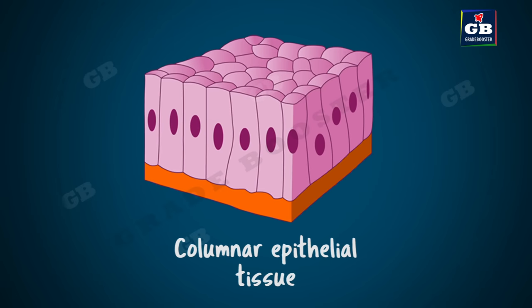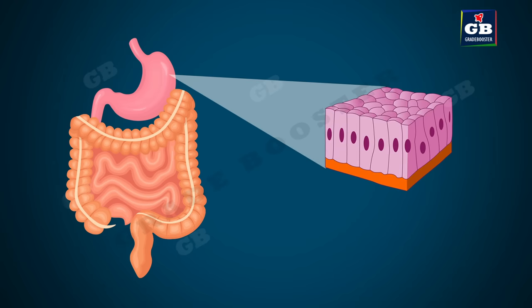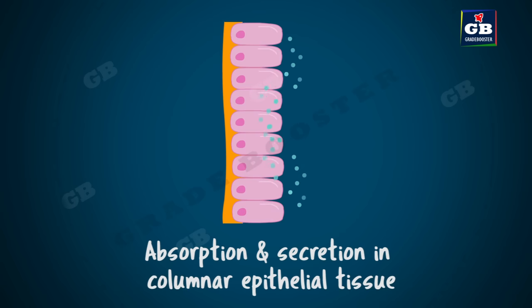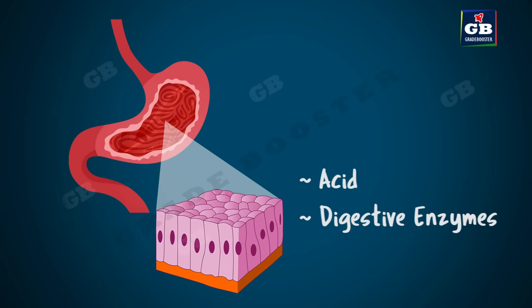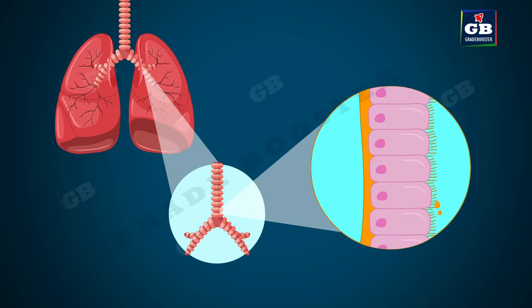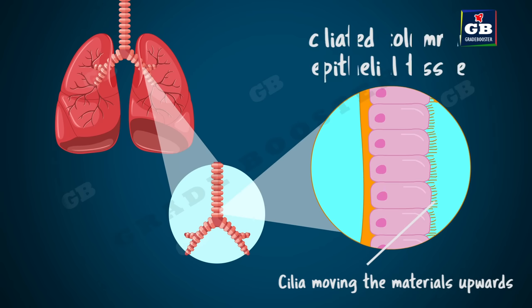Cuboidal epithelium present in the kidney tubules and lining of intestine helps in absorption of materials. The next one is columnar epithelium. Columnar means pillar-like — these cells look like pillars. This tissue is mostly found in the lining of stomach, small intestine, and large intestine. Its primary function is absorption and secretion. The columnar epithelial tissue in the stomach secretes acid, digestive enzymes, and mucus. The columnar epithelial tissue in the lungs has cilia that help in the upward movement of mucus. This is called ciliated columnar epithelial tissue.